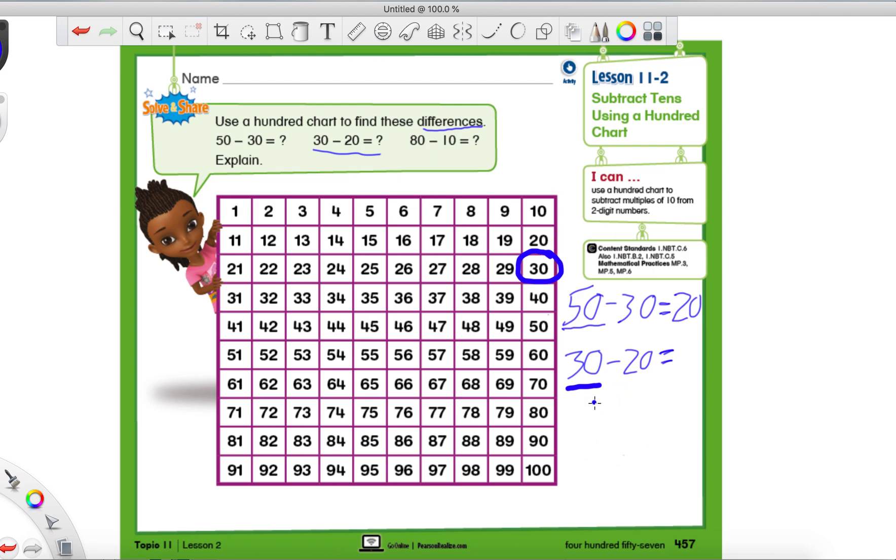So we find our 30 and don't forget all of the tens are in this last column here. Okay, we found our 30. What is our next step? We have to make some jumps. We got to take away. How much are we taking away? Twenty. All right, so remember you can either use my little trick where you just look at the tens place as the number two, you make two jumps.